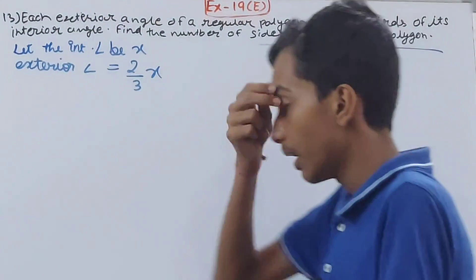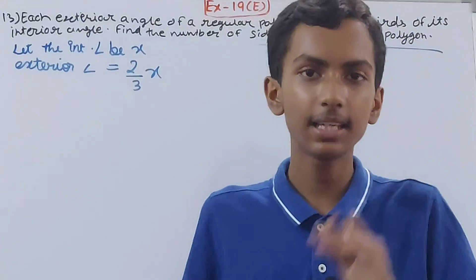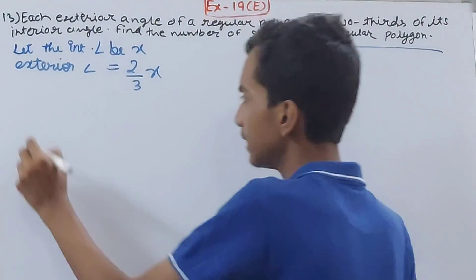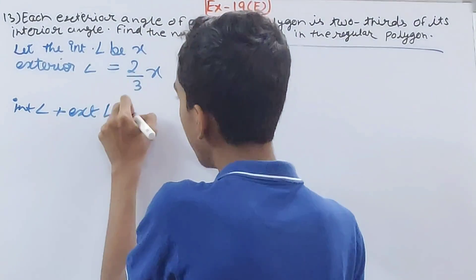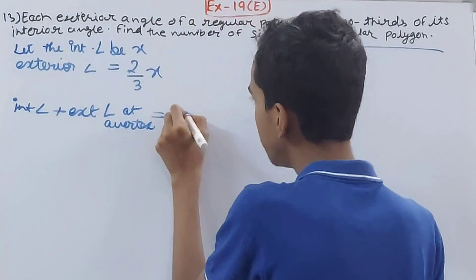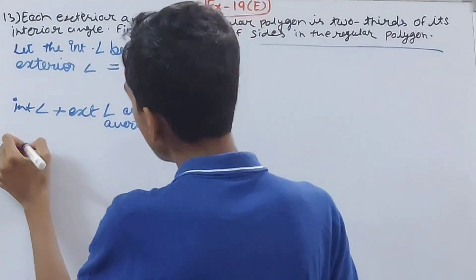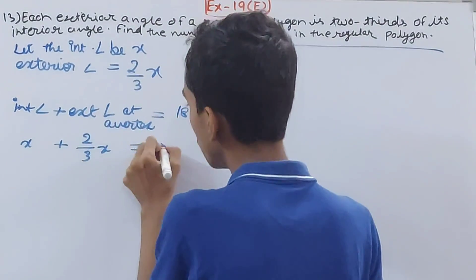Do we know this fact? When we add the interior angle and the exterior angle at a vertex, the sum is 180 degrees. So interior angle plus exterior angle at a vertex equals 180. The interior angle is x, exterior angle is 2/3 x, and it equals 180.